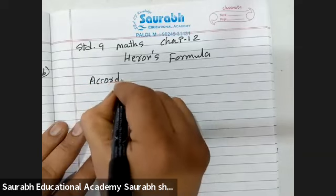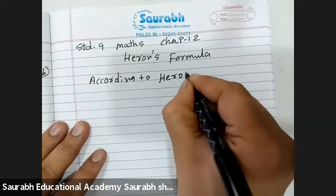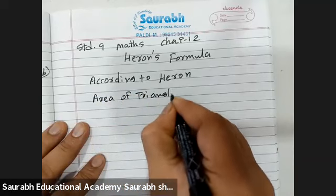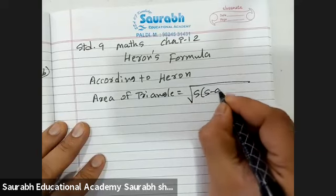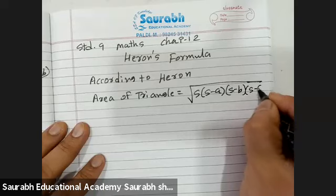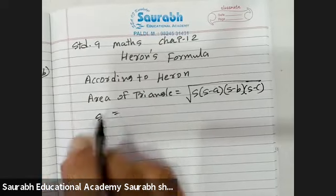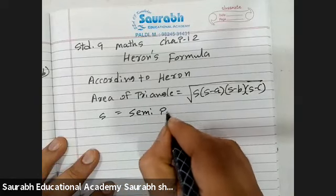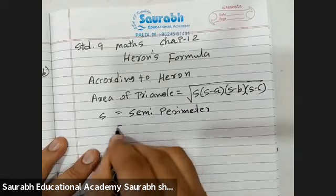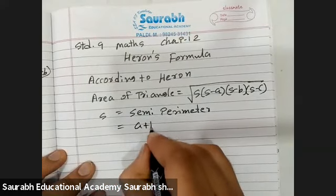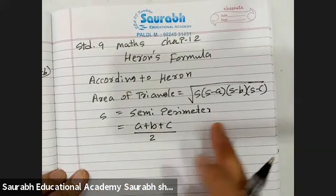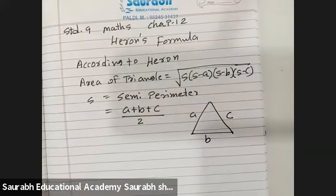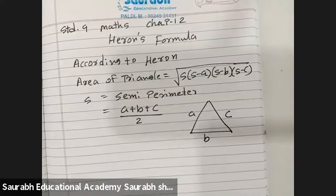According to Heron, area of a triangle is equal to root of S(S minus A)(S minus B)(S minus C), where S is equal to the semi-perimeter — that is, the sum of the three sides A, B, C divided by two. This is the formula of Heron for the area of a triangle.